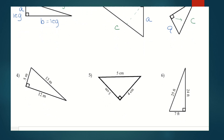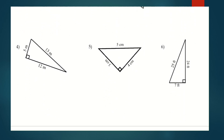Looking at number four, we're given actual measurements. The two shorter sides that create the right angle are our legs — I'll label the five-meter side A, twelve meters is B, and our hypotenuse, always the longest side, is C. In numbers five and six, the two legs A and B create a right angle, and across from that right angle the longest side is C, our hypotenuse.